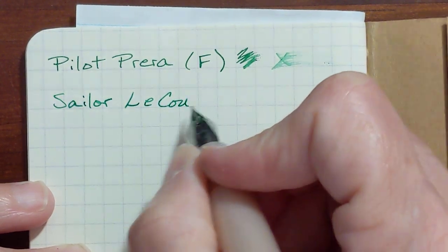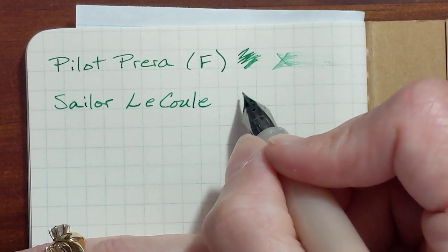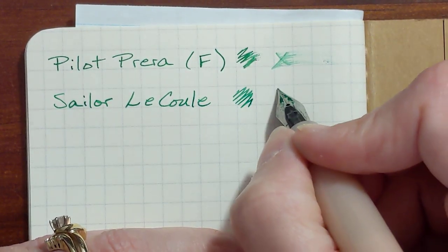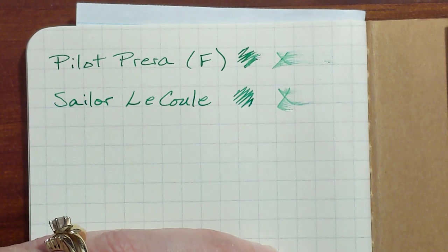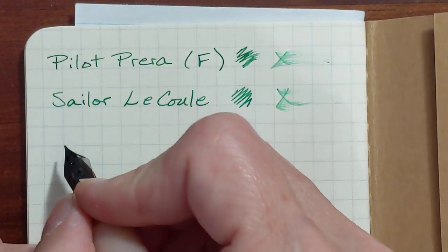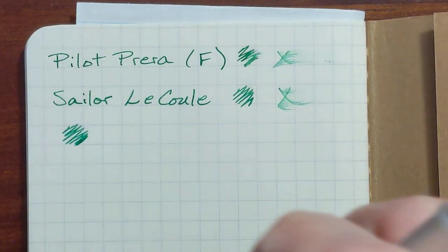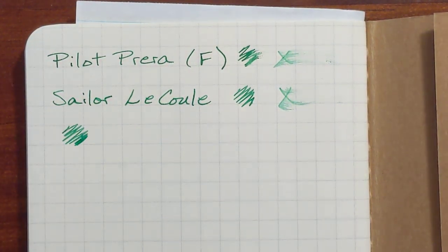I'm going to have to try another paper because, yeah, this is not very smooth. And pretty dry. Both of these are pretty dry on this paper. So this one's the Lacool. Ooh, not very smooth. I'll try a couple different papers.